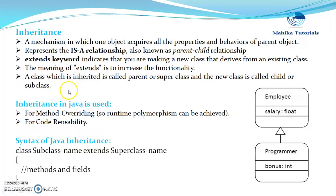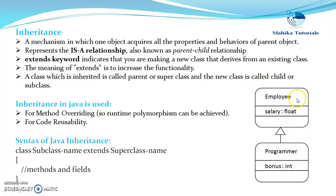A class which is inherited is called the parent or super class, and the new class is called the child or subclass. In our example, Employee is the super class and Programmer is the subclass, or child class. So we can say: class Programmer extends Employee.